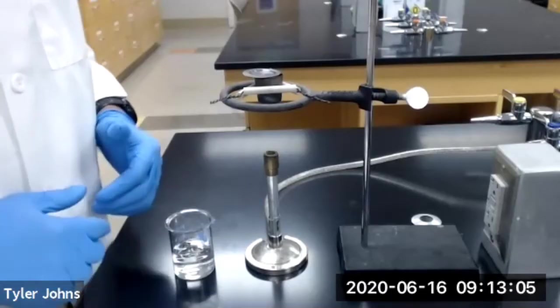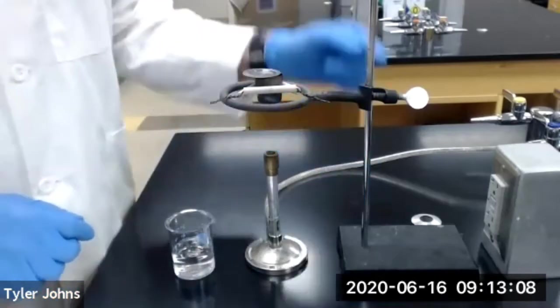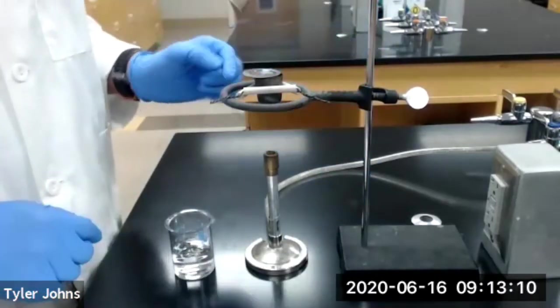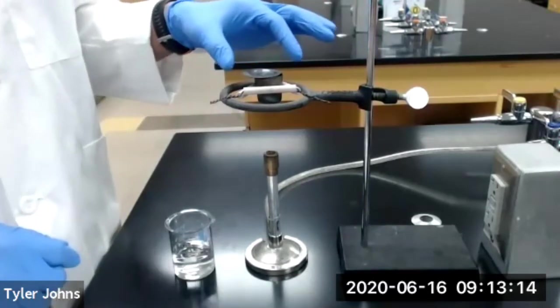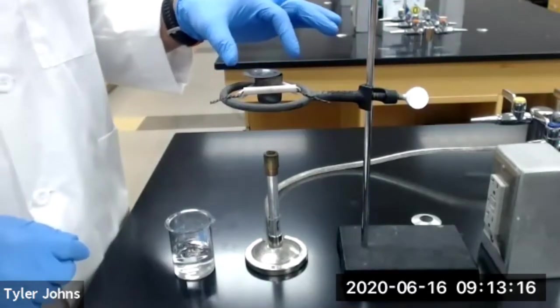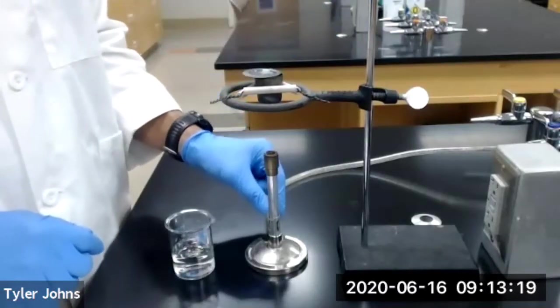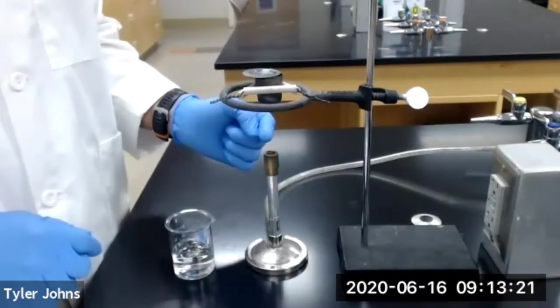So the first thing we want to do is set up our equipment stand. We have our equipment stand here, an iron ring, a clay triangle sitting on top of the iron ring, and our crucible and crucible cover sitting inside the clay triangle. We also have our Bunsen burner set up directly underneath the crucible.